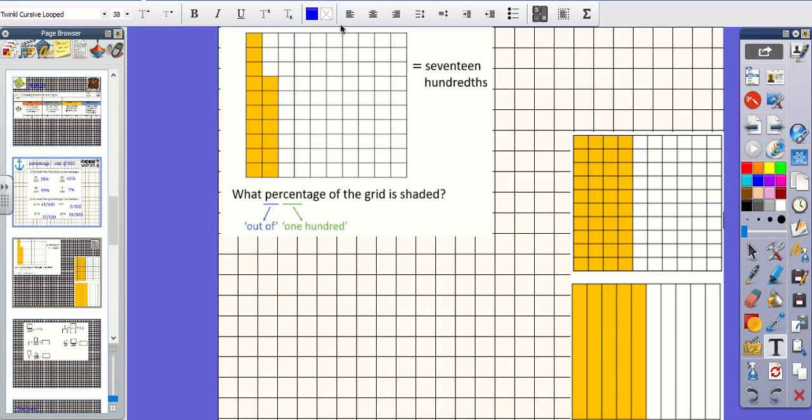So here we have got a 100 square. It tells us here that 17 hundredths have been shaded in. So what percentage of the grid is shaded? So 17 hundredths would look like that as a fraction. So our denominator is 100. So we can say that 17% of that grid has been shaded.